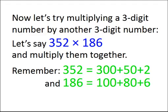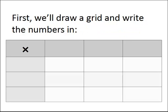Now let's try multiplying a three-digit number by another three-digit number. Let's say 352 times 186, and multiply them together. Remember, 352 means 300 plus 50 plus 2, and 186 means 100 plus 80 plus 6. First, we'll draw a grid and write the numbers in.